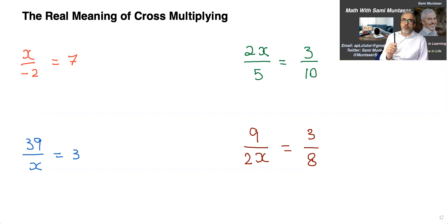In situations like this you could do all of that in a very quick one step. Okay, so what does cross multiplying mean?